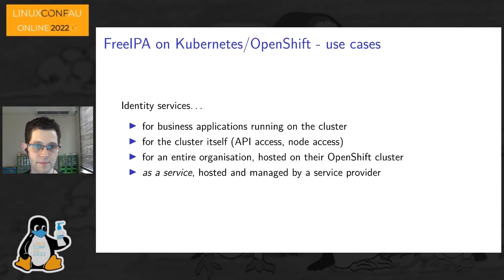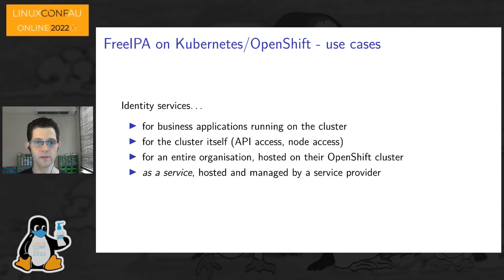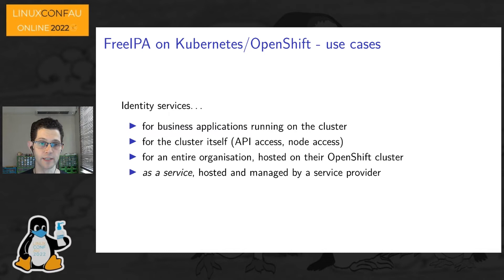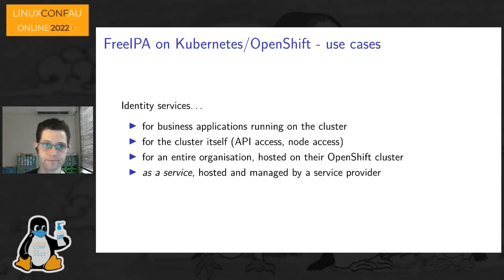There's also the idea of offering identity management as a service — a service provider offering FreeIPA as a turnkey managed service where an organization can find it in a cloud service catalog, click OK, deploy, and a short time later the identity management system is set up. These would typically be deployed on the service provider's own infrastructure, managed by the provider, and co-tenanted with multiple different customers' application instances living side by side on the cluster.